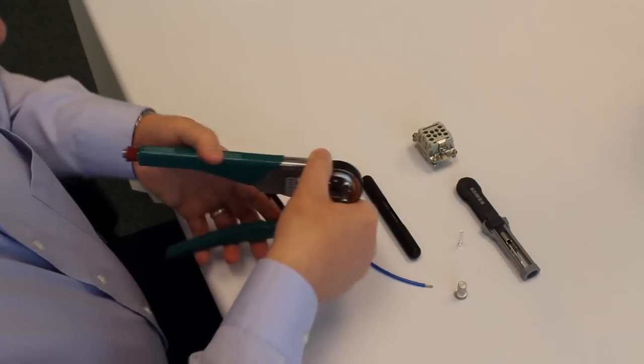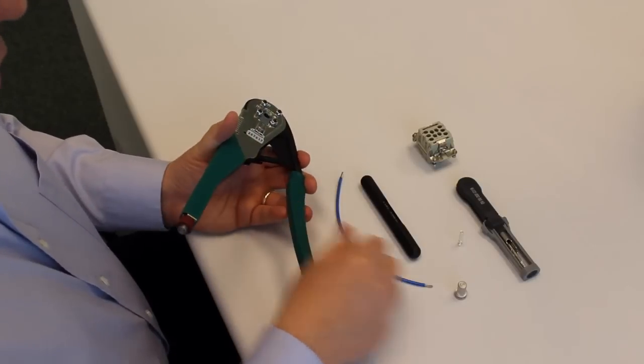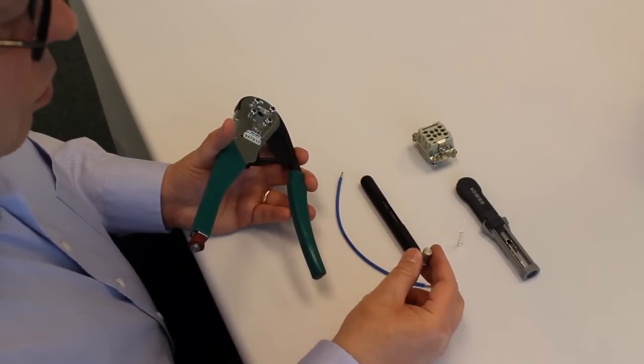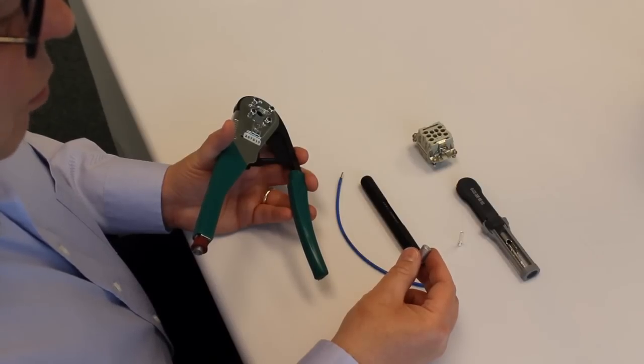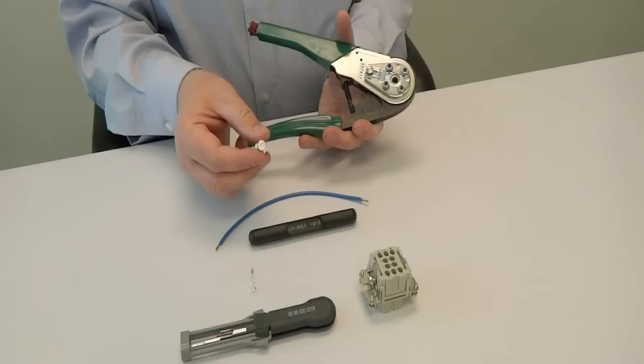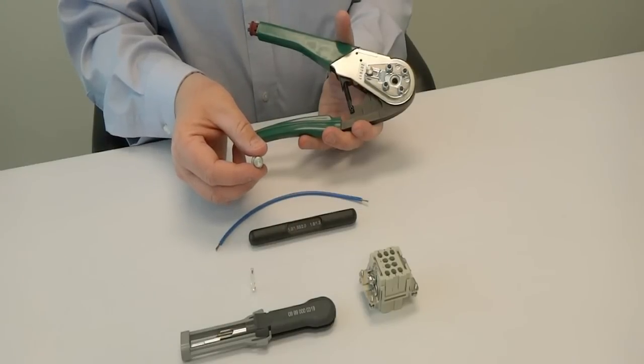First thing to do is to install the correct locator. The locator is sold as a separate item and is added to the tool depending on the contact to be crimped. In this case we have an E stamped at the end because it's for our Han E crimp contacts beginning with part number 0933.